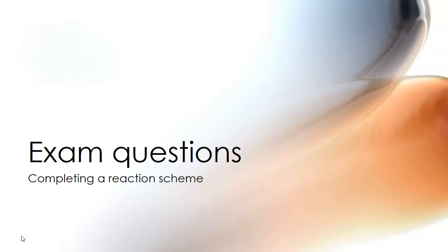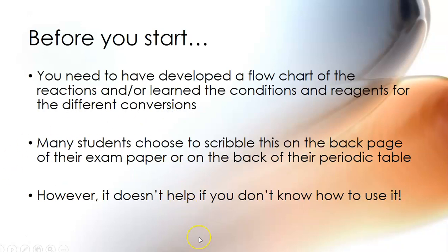Okay so before you start, this is really important. Before you start you need to have some sort of a flowchart or reaction scheme or list of reactions in your head so that you know what are the different reaction types, the reagents, the conditions, etc. to go from functional group A to functional group B.